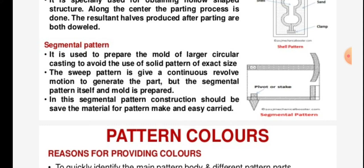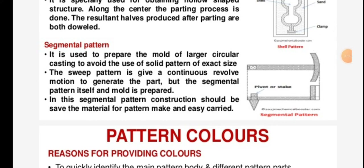Segmental pattern: it is used to prepare the mold of larger circular castings. To avoid the use of a full-size sweep pattern, the segmental pattern itself is given a continuous revolving motion to generate the mold. In segmental pattern construction, the aim is to save material for pattern making and make it easy to carry.